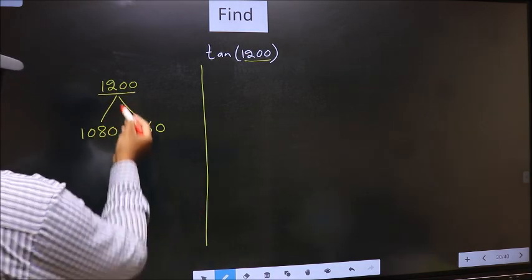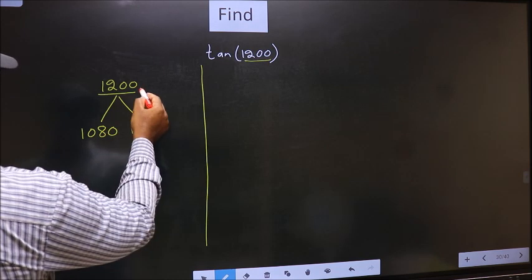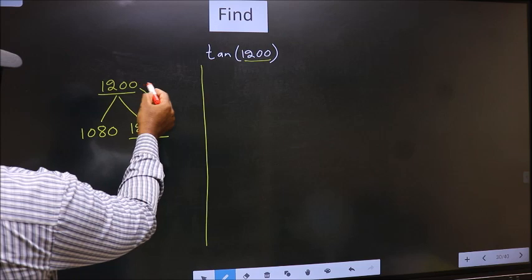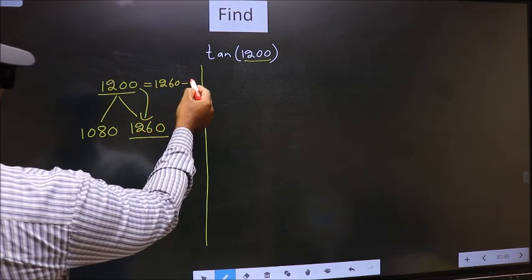Next, 1200 is close to which number? This is close to 1260. So in place of this, now we should write 1260 - 60.